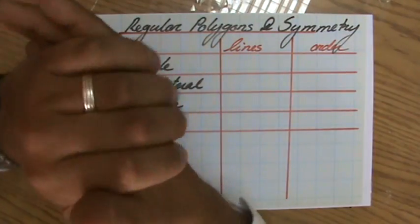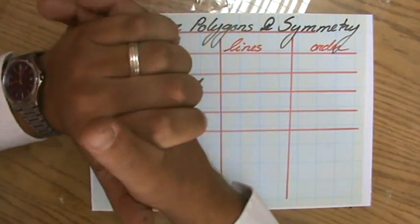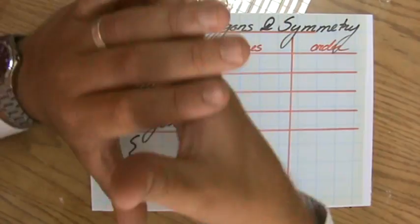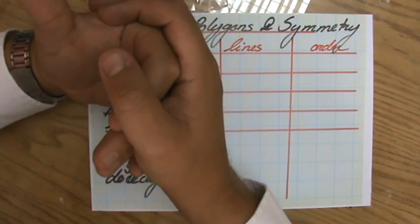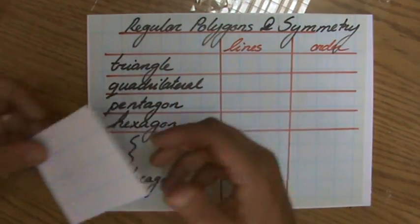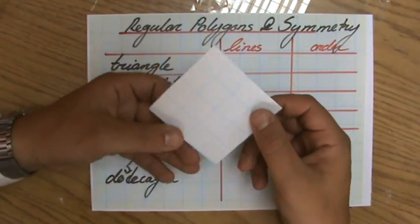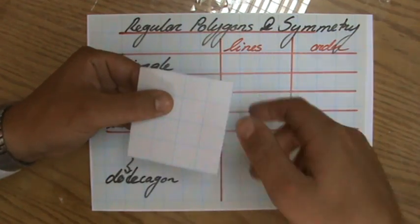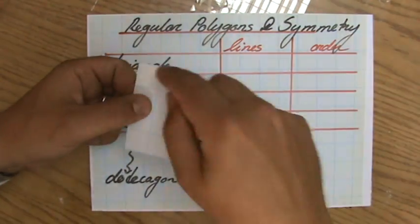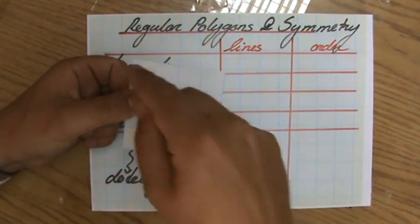But I promised to do one video about regular polygons and symmetry. And what are regular polygons? Well, you hopefully know that that is a shape where all the sides are equal in length and all the angles are equal in size. For instance, a square is a regular polygon because all the sides are equal in length and all the angles are also the same, they're all 90 degrees.